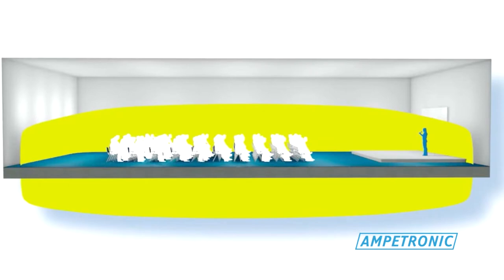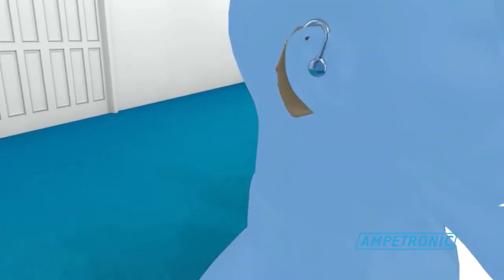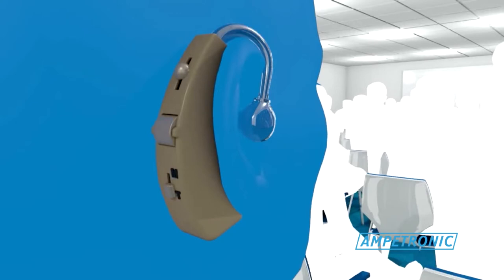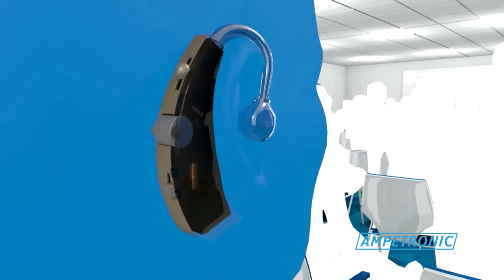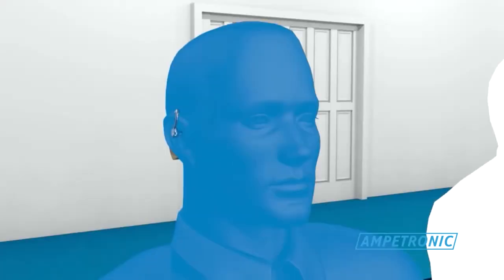International Standard stipulates performance for field strength and consistency throughout the listening area. The magnetic field induces a current in the telecoil, which is then translated into audio by the hearing aid, transferring it directly to the ear canal using the hearing aid's own speaker.